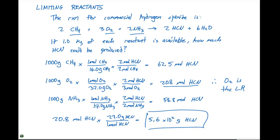And this is the amount of HCN that's going to be produced when we react 1,000 grams of CH4, 1,000 grams of O2, and 1,000 grams of NH3.